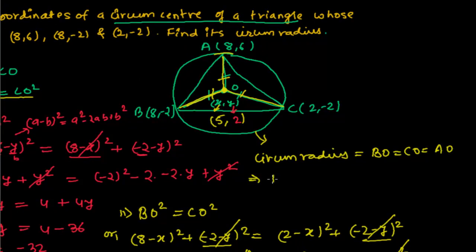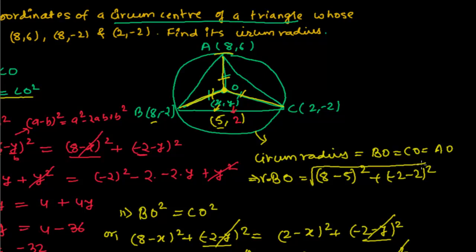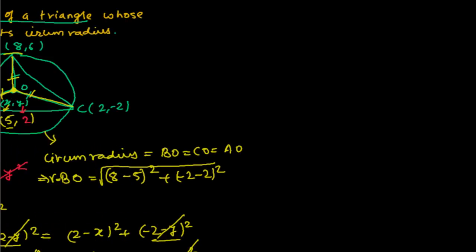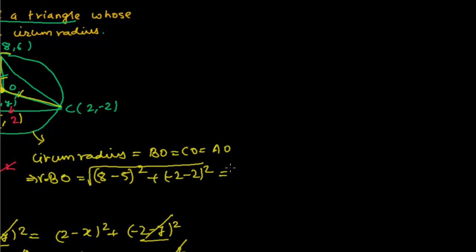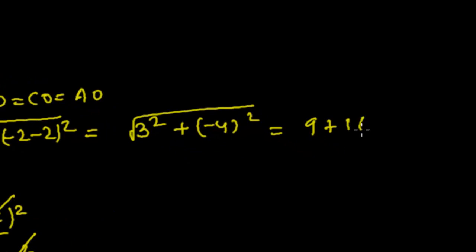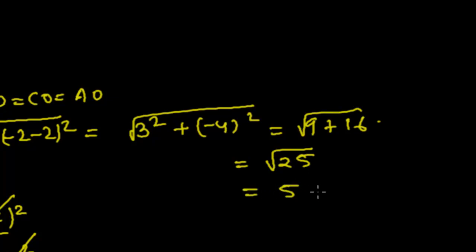Circumradius = BO = √[(8 - 5)² + (-2 - 2)²] = √[3² + (-4)²] = √[9 + 16] = √25 = 5 units. So our circumradius is 5 units.